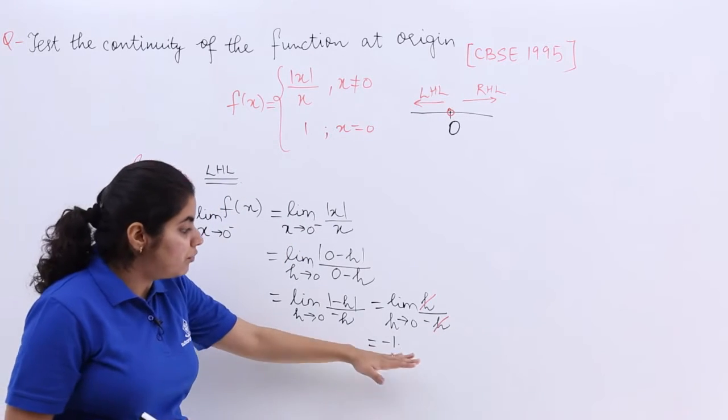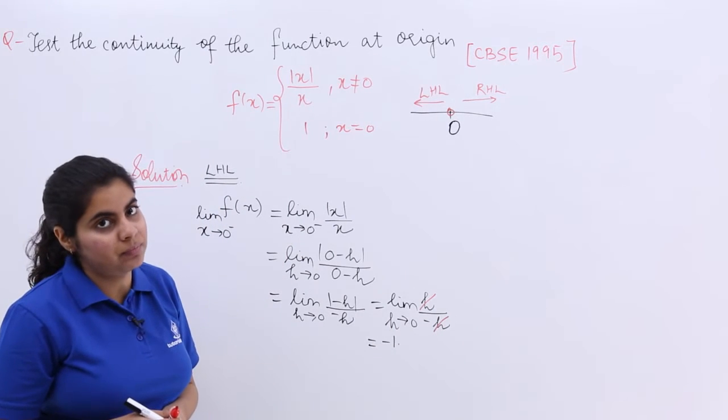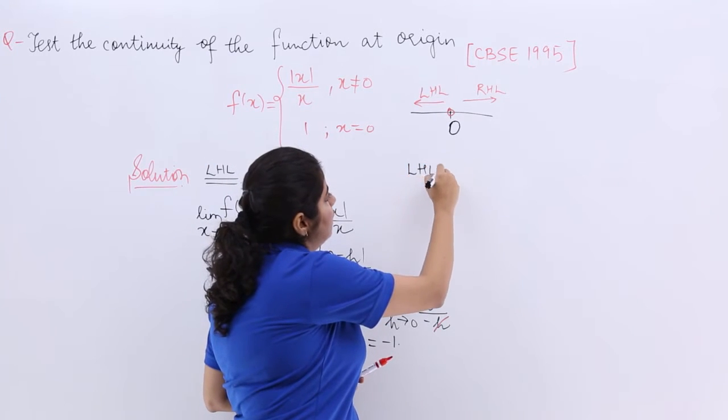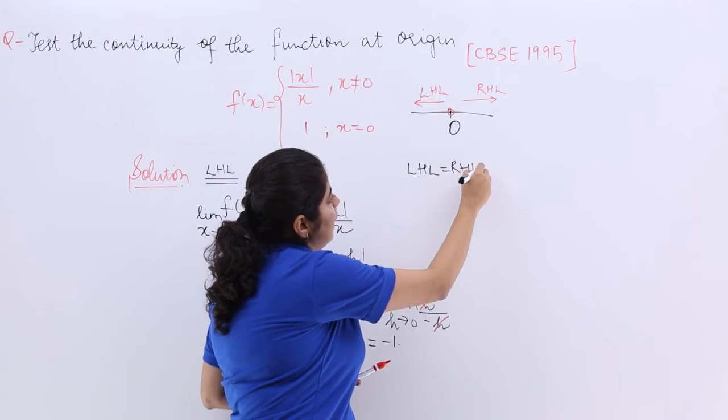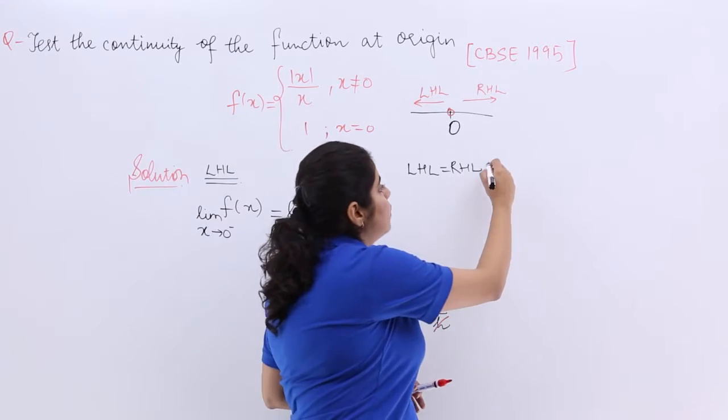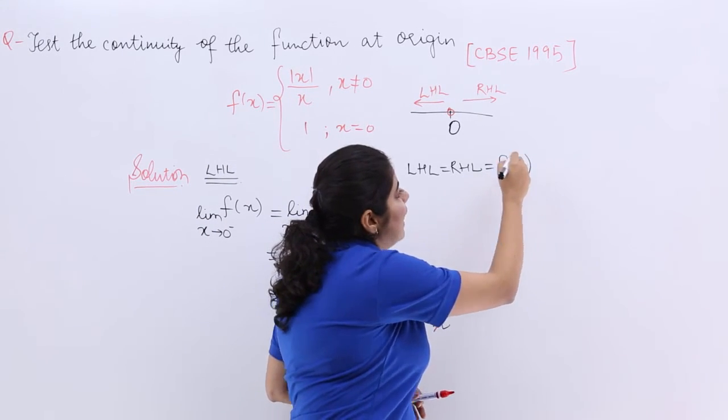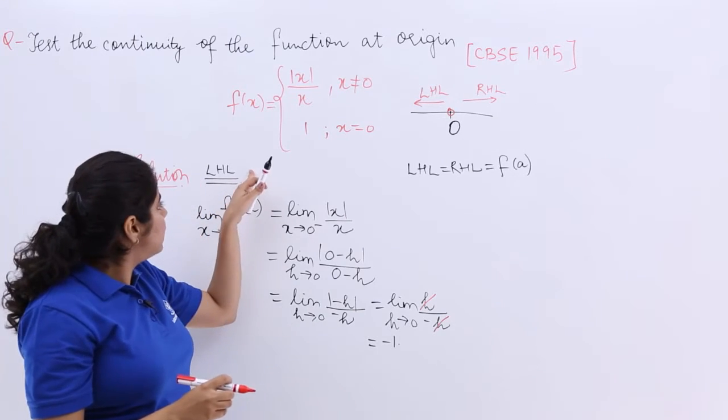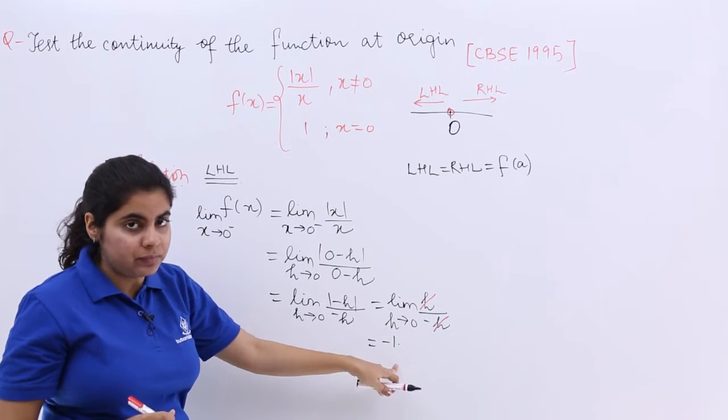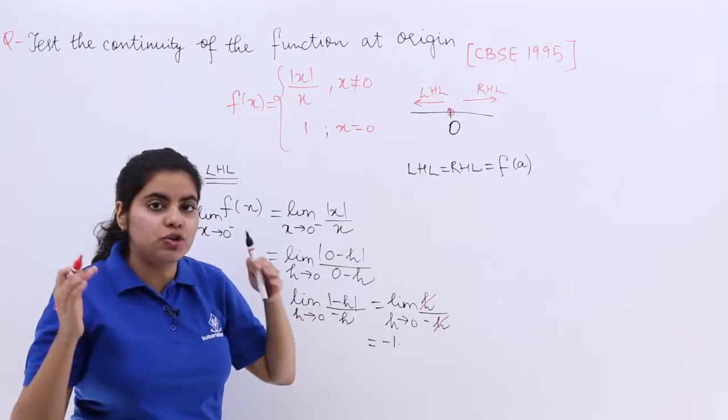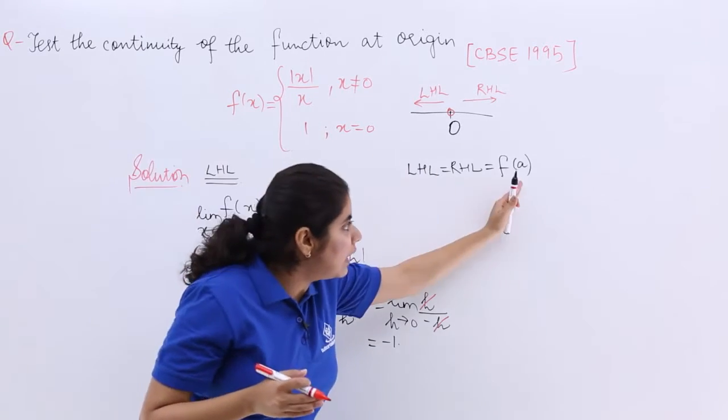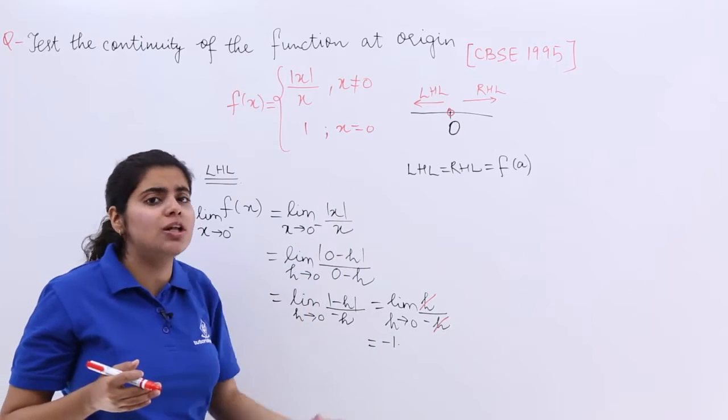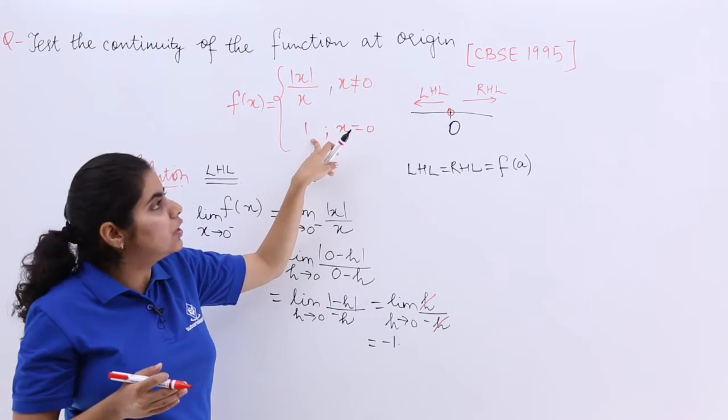Now you know that for continuity, left hand limit should be equal to right hand limit should be equal to the value of the function at that point. So if the left hand limit is minus 1, even the right hand limit should be minus 1 and the value of the function at x is equal to 0 should also be minus 1. But you see here it is 1.